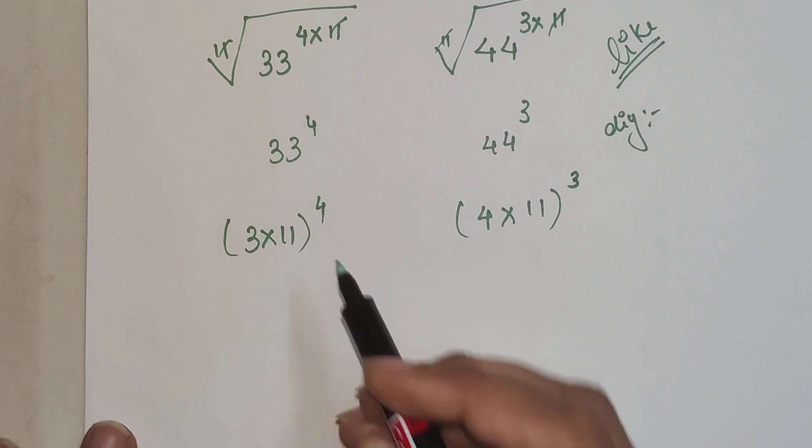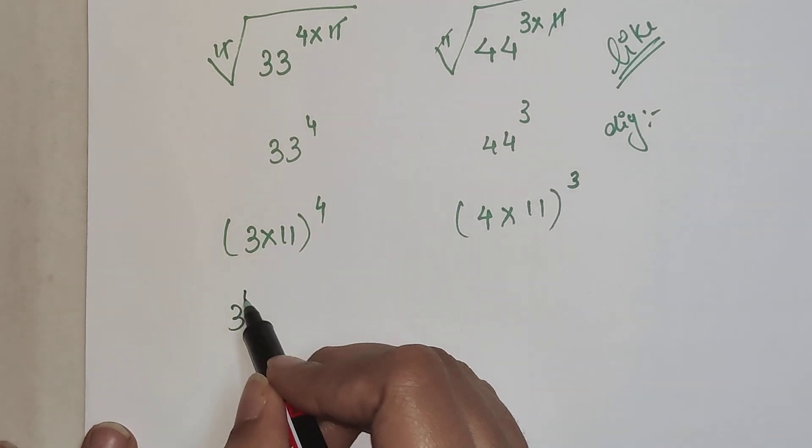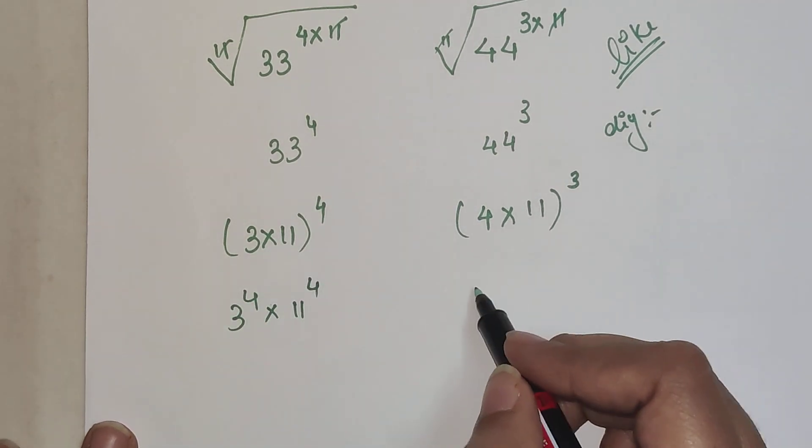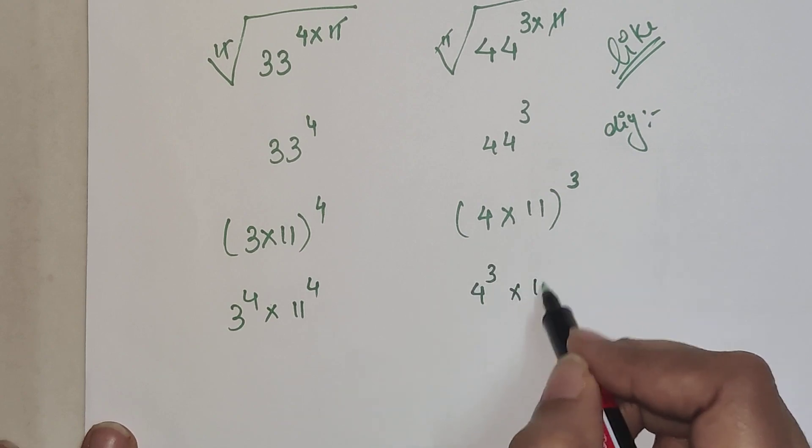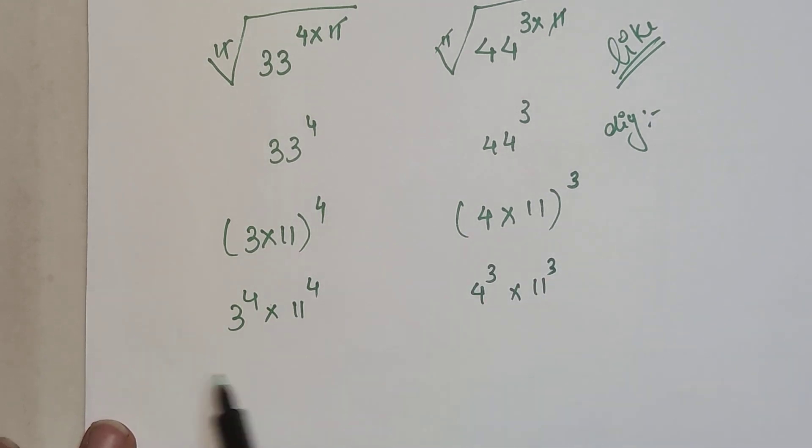This can be written as 3 raised to 4 times 11 raised to 4. Similarly, 4 raised to 3 times 11 raised to 3. Now dividing both sides by 11 raised to 3.